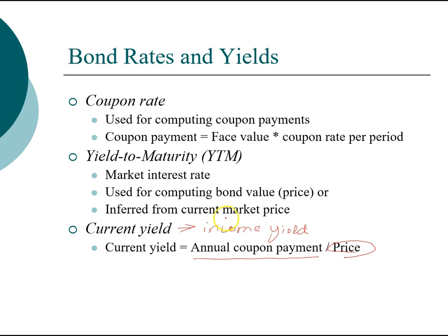Think of a real estate property: you can get rental income that's recurring, and when you eventually sell you get a one-time capital gain. Current yield is useful when comparing investments and evaluating the income component versus the capital gains yield component. For accounting students this is particularly important because income is taxed at a different rate than capital gains.